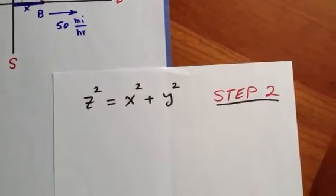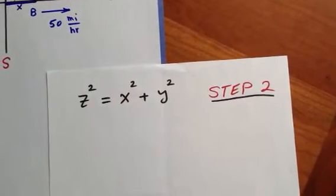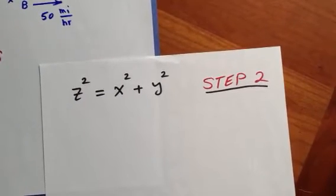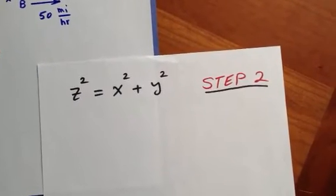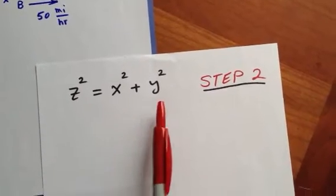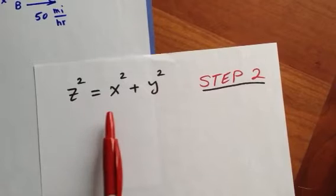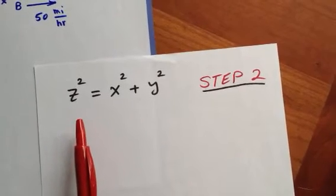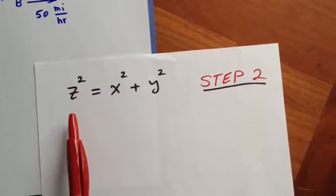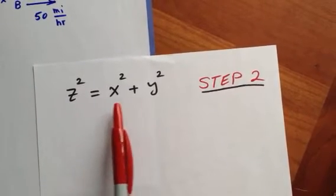And that is step 2. Now we are ready to do step 3. Step 3 is to find a relationship that has all the rates instead of the original variables. So in order to do that, we differentiate both sides of this relation with respect to time t.